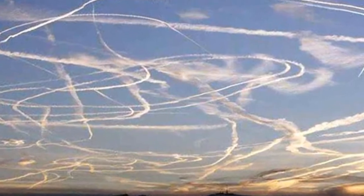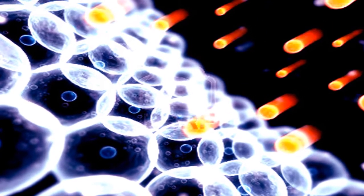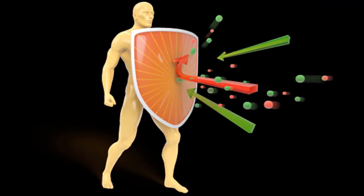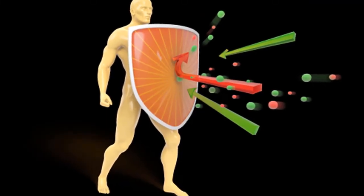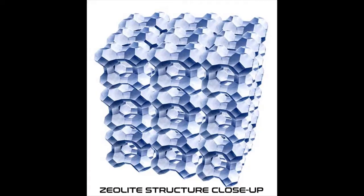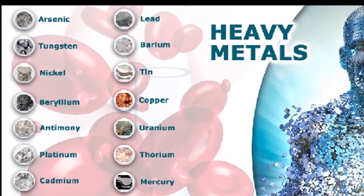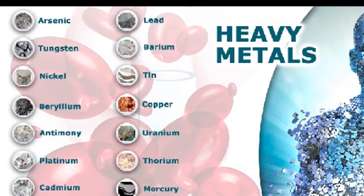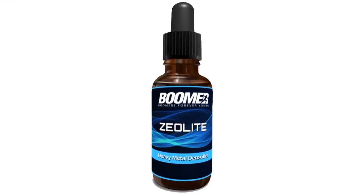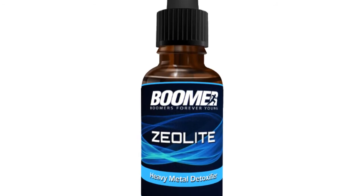From environmental toxins like those found in chemtrails to the free radicals we create on a daily basis as our body grows and ages, superoxide dismutase acts as the first line of defense in the removal of toxins and free radicals from the body. Boomer Zeolite helps remove what SOD cannot. Heavy metals and esoteric man-made toxins require specially structured compounds to extricate them from your body. Boomer Zeolite is a breakthrough supplement that works at the cellular level by trapping heavy metals and toxins and safely removing them from the body.